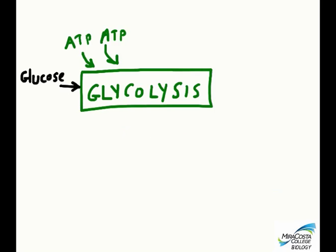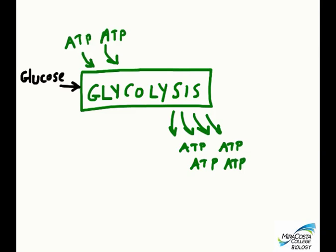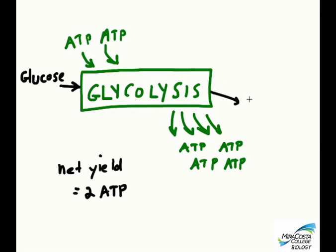We actually use two molecules of ATP in the first part of glycolysis, but then we get back four ATP in the second part, to end up with a net yield of two molecules of ATP for glycolysis overall. At the end of glycolysis, glucose will have been split into two pyruvic acid molecules. Glucose has six carbons and each pyruvic acid has three.